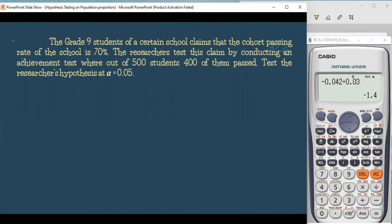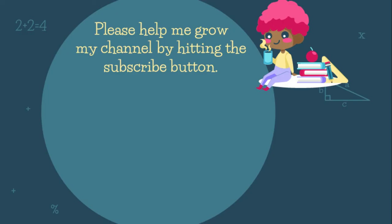For step number four, our decision is to accept HO. Our conclusion is: the evidence is enough to show that the proportion of students who support at least two K-pop groups is 0.35 or less. For the last example, try to answer it on your own. Let me know if you still have questions by commenting below or messaging me. If you find this video helpful, please like and subscribe. See you next time!